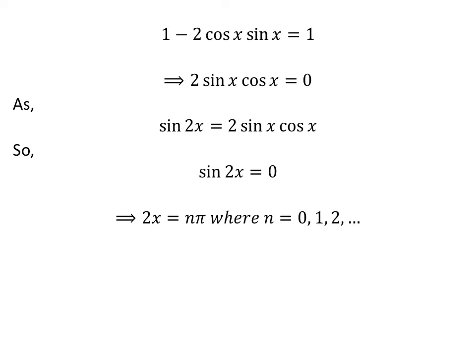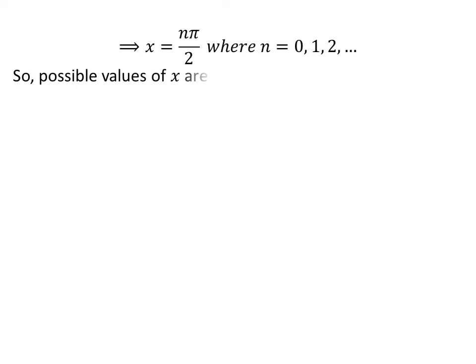Sine of 2x equals 0 is only possible when 2x is equal to n times pi, where n is 0, 1, 2, and so on. Dividing both sides by 2 gives us x is equal to n times half of pi. So the possible values of x are 0, half of pi, pi, 3 times half of pi, and so on.